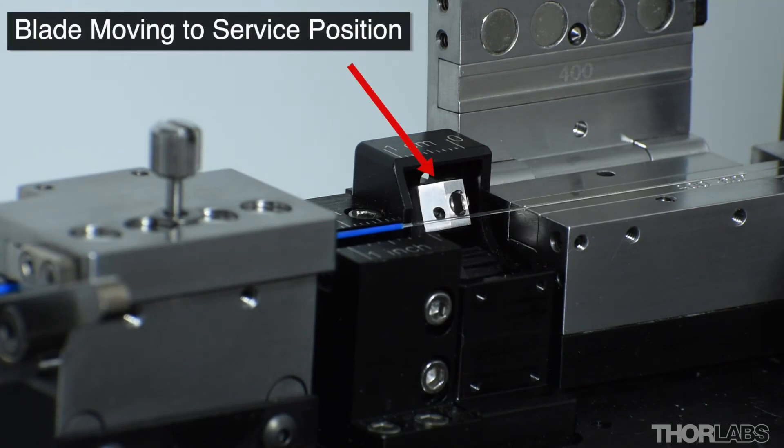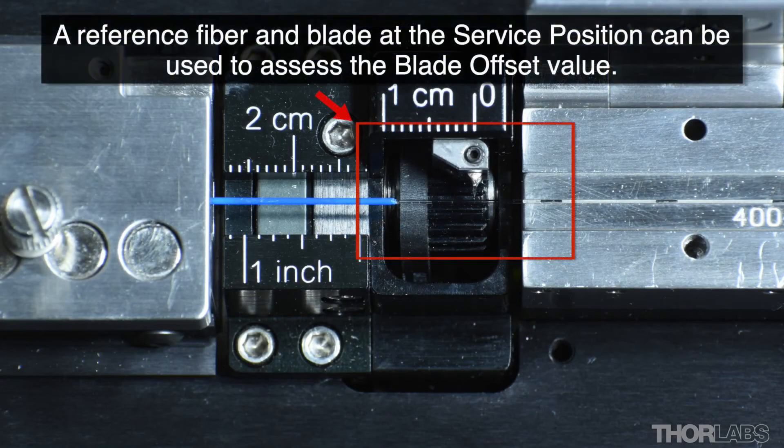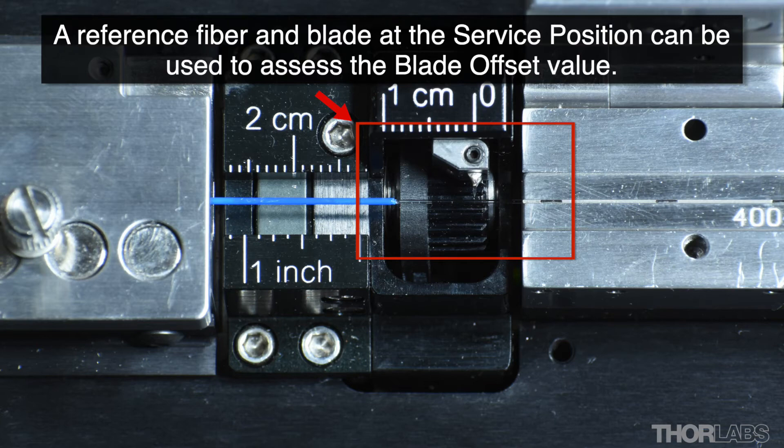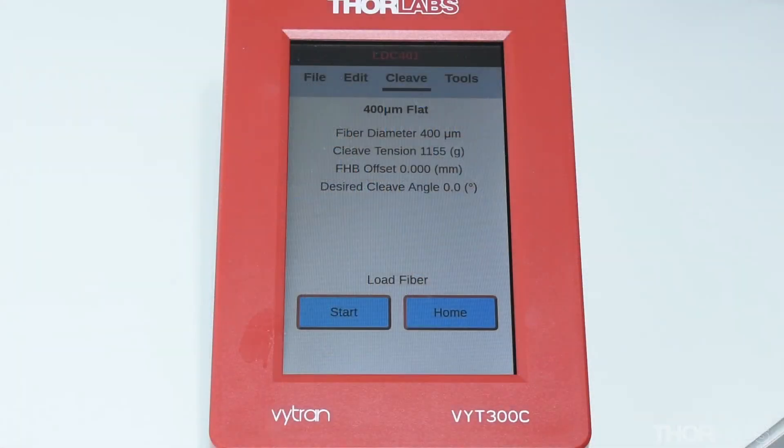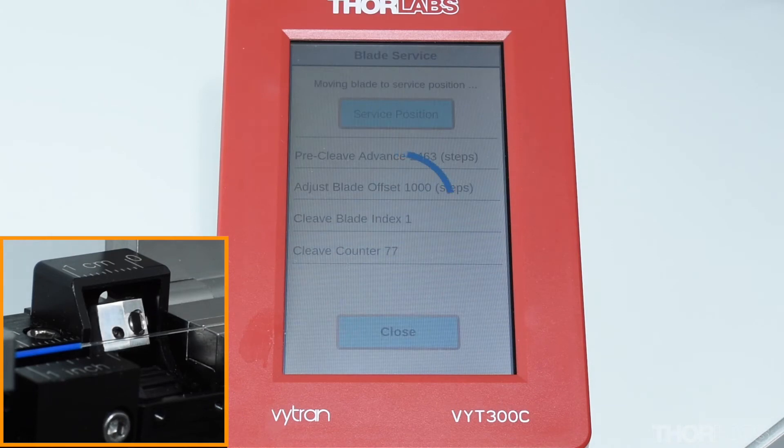When the cleave blade is moved to the service position, it moves forwards by the blade offset plus the pre-cleave advance distances. In other words, the same as the blade's initial forward move at the start of a cleave. Moving the blade to the service position with the reference fiber in place can be used to judge if the blade offset value is set correctly. With the reference fiber in place, use the handset to move the blade to the service position. Once the move has completed, observe the blade's end position relative to the reference fiber.